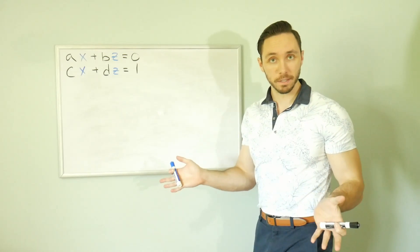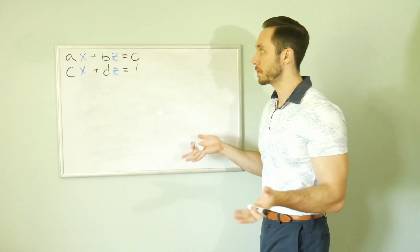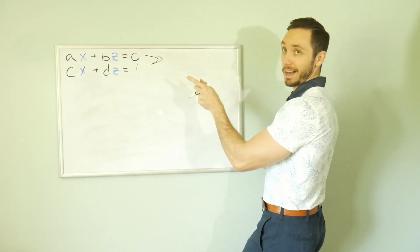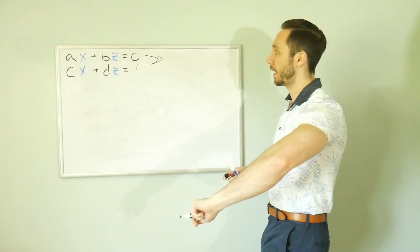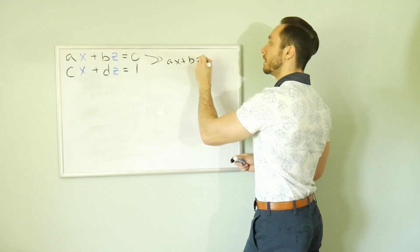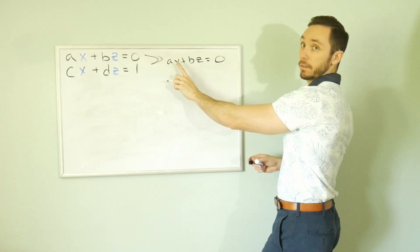I think substitution is going to be best here. Elimination looks gross. So let's do this. How about we isolate this X in the top equation, plug it into the X in the bottom one. So we're going to have AX plus BZ is equal to zero. Let's solve for this X.